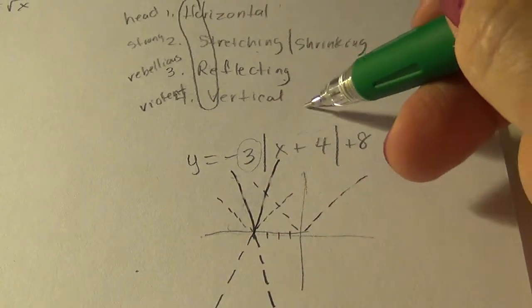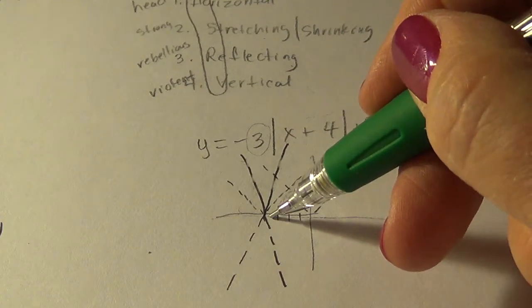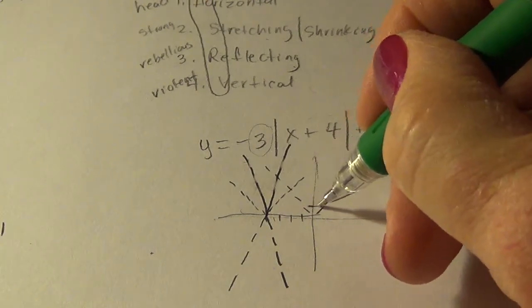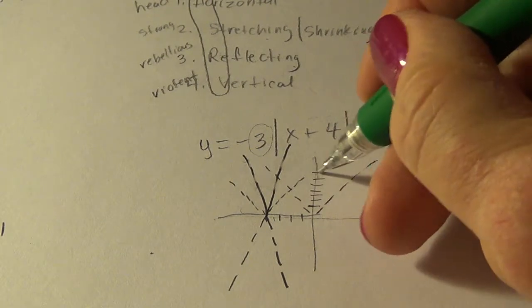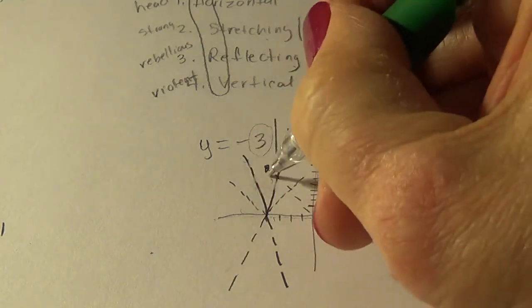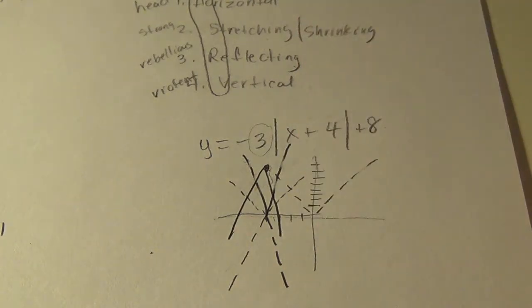And lastly, we do the verticals. We're going to move that up eight. So it was right here. So it's going to go up eight to about here. So this whole shape is moving up eight. And we have that.